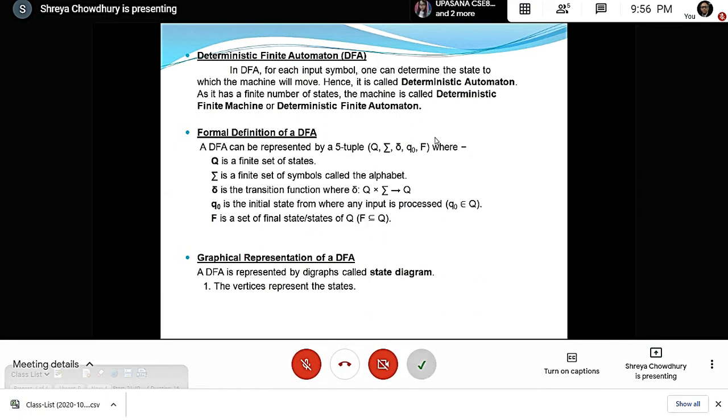q₀ is the initial state from where any input is processed, and q₀ belongs to Q. F is a set of final states of Q. F is basically a subset of Q, the finite set of states.